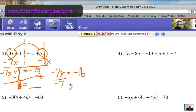Now, we're going to divide each side by negative 7. And we get X all by itself. And that answer is going to be a positive 16 sevenths.